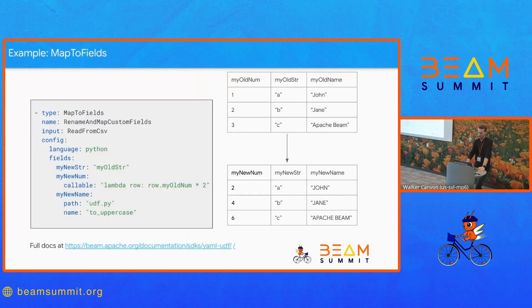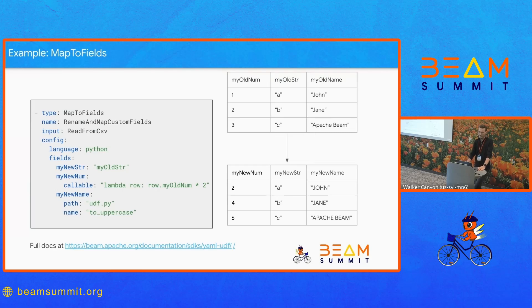Here's an example. Because I'm trying to do mostly an overview of Beam YAML, with a more in-depth talk tomorrow, I'm not going to go over the inner workings, but as you can see, it's as simple as defining the config. For map to fields, that's specifying a language and the fields you're trying to map. We try to keep it as YAML-friendly as possible with any turnkey transforms.